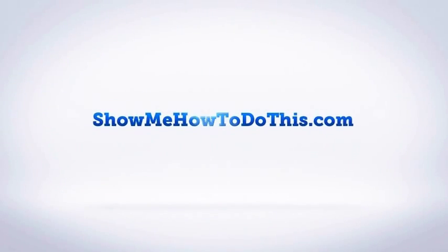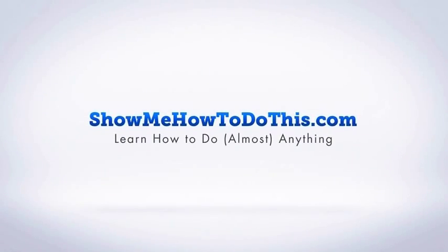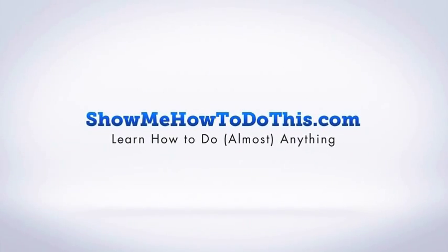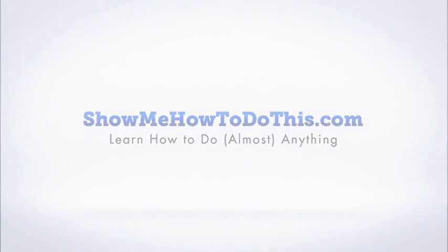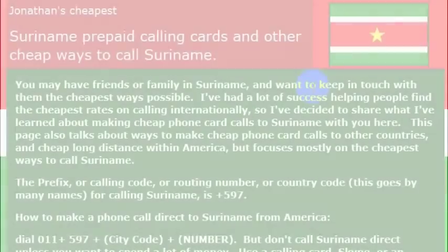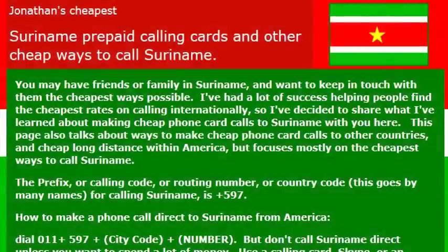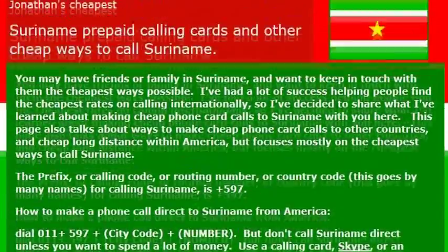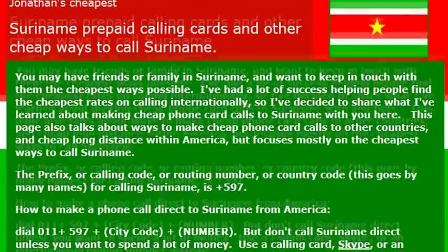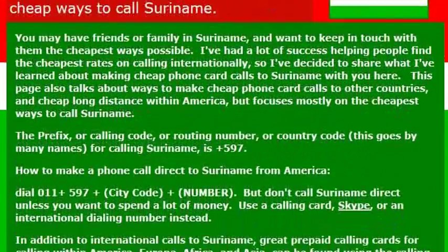Calling Suriname, or Suriname depending on who you are and how you say things, is a pretty simple process if you're calling from the United States — whether you want to reach friends or family there, or maybe you're making travel arrangements. You just need to know the country code for Suriname, which is 597.